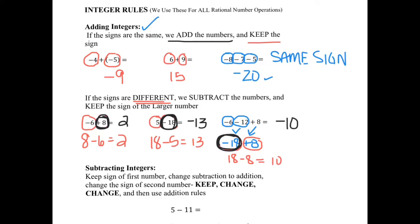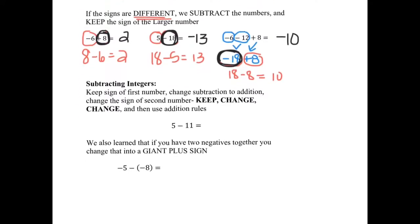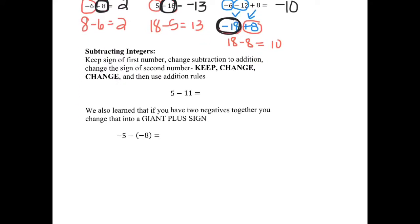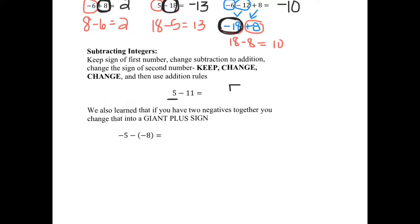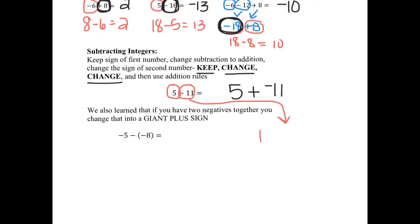That's for adding integers. We also talked about subtracting integers. When you subtract integers, you can keep the sign of the first number, change subtraction to addition, and add the opposite — keep, change, change. However, I think that's confusing, so instead I taught you to just circle the two numbers. I have positive 5 and negative 11. Signs are different, so I subtract: 11 take away 5 is 6. Keep the sign of the bigger number — so it would be negative 6.